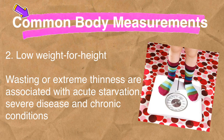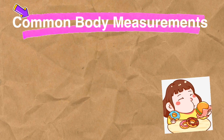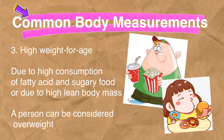Number two, low weight for height — wasting or extreme thinness is associated with acute starvation, severe disease, and chronic conditions. Number three, high weight for age — due to high consumption of fatty and sugary foods, or due to high lean body mass, a person can be considered overweight.